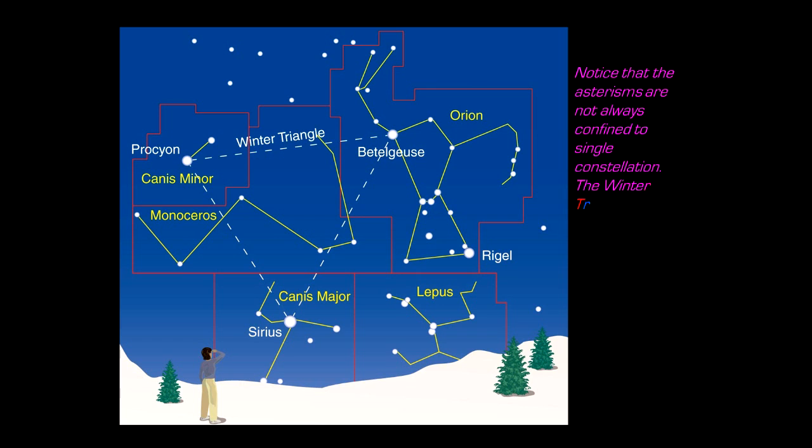Well, just to point out that the asterisms, in this case we have the Winter Triangle again, not just confined to a constellation, but in this case it's part of three constellations, and actually the geographic region is spread out over four constellations.